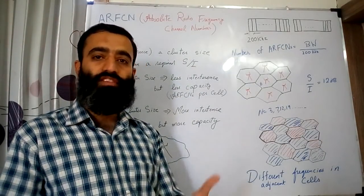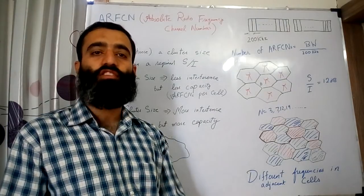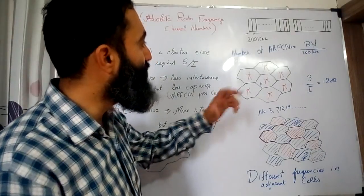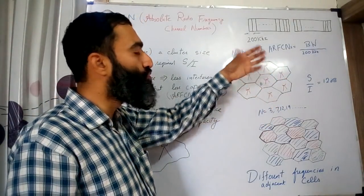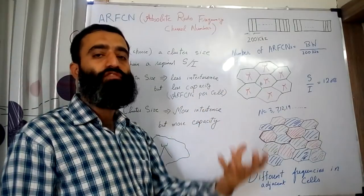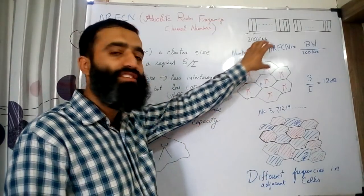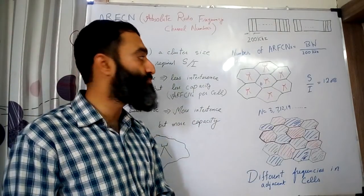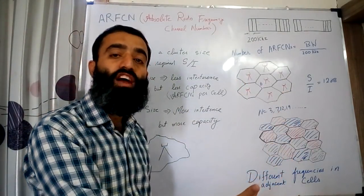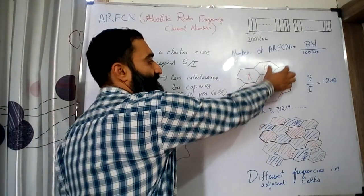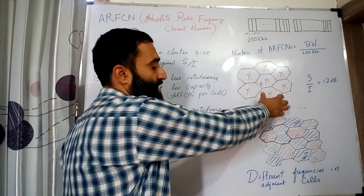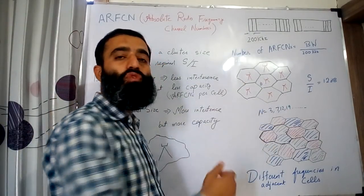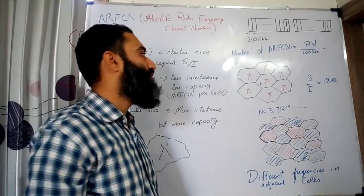The next question is how the operator is going to use these ARFCNs. The most logical conclusion is that we use all 25 ARFCNs in all the cells to have maximum capacity — accommodating the maximum number of subscribers. We could use all 25 ARFCNs in every cell. In the diagram, the red markers are base stations and the blue markers are mobile stations.